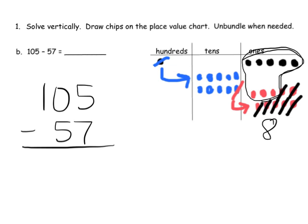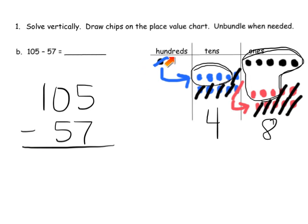Then it says take away 5 tens. So we're going to take away 5 tens — no unbundling necessary now: 1, 2, 3, 4, 5. That leaves us with 4 tens. And then it says don't take away any 100s, and that's okay because we have no 100s anyway since we unbundled it. So the answer is 48.